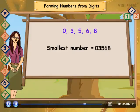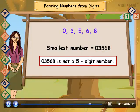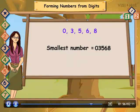Smallest number is equal to 03568. If we write the number in this way, then the number formed is not 5 digits. So, in order to form a 5 digit number, we need to shift 0 to next to 3.